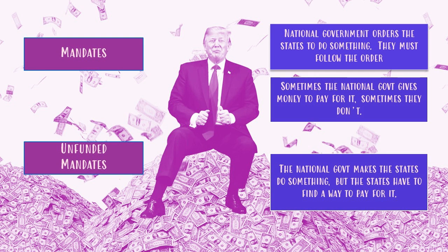Sometimes the national government gives the states money to pay for what they want them to do — that's what the states prefer. Sometimes the national government does not, and in that case we call this an unfunded mandate. This is what makes the states upset: the national government tells them to do something and they have to do it, but does not give them any increased funding to make it happen. So the states have to find a way to pay for it.